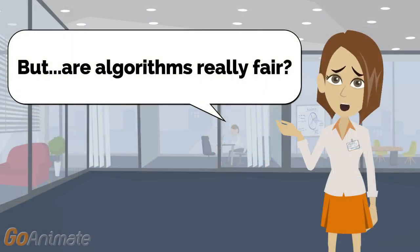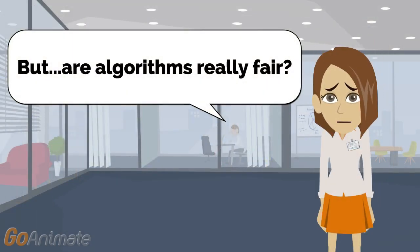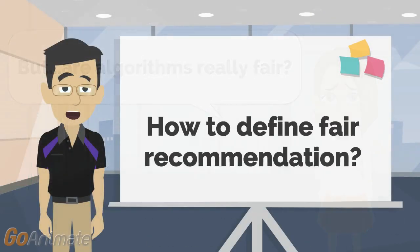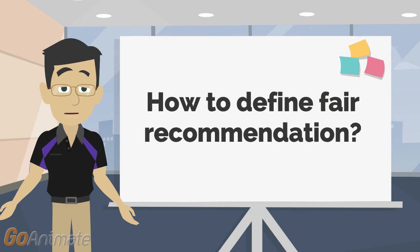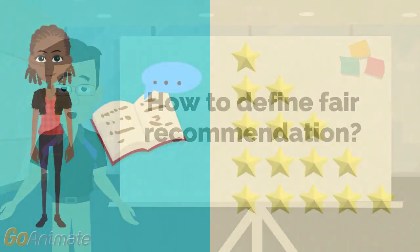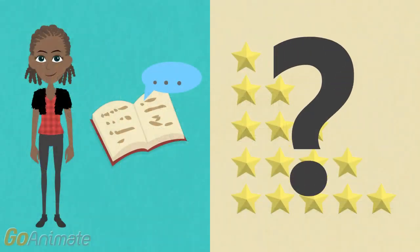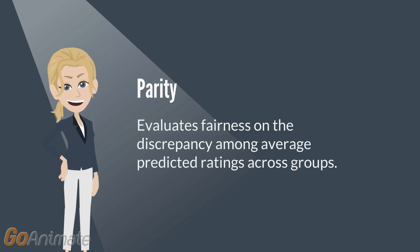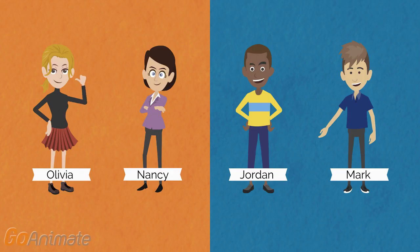Will this work? Can she really trust the algorithm to be fair? Let's first discuss the idea of fair recommendation. Take a task to predict ratings from 1 to 5 as an example. One popular and intuitive definition of fairness is parity, which evaluates fairness on the discrepancy among average predicted ratings across groups.